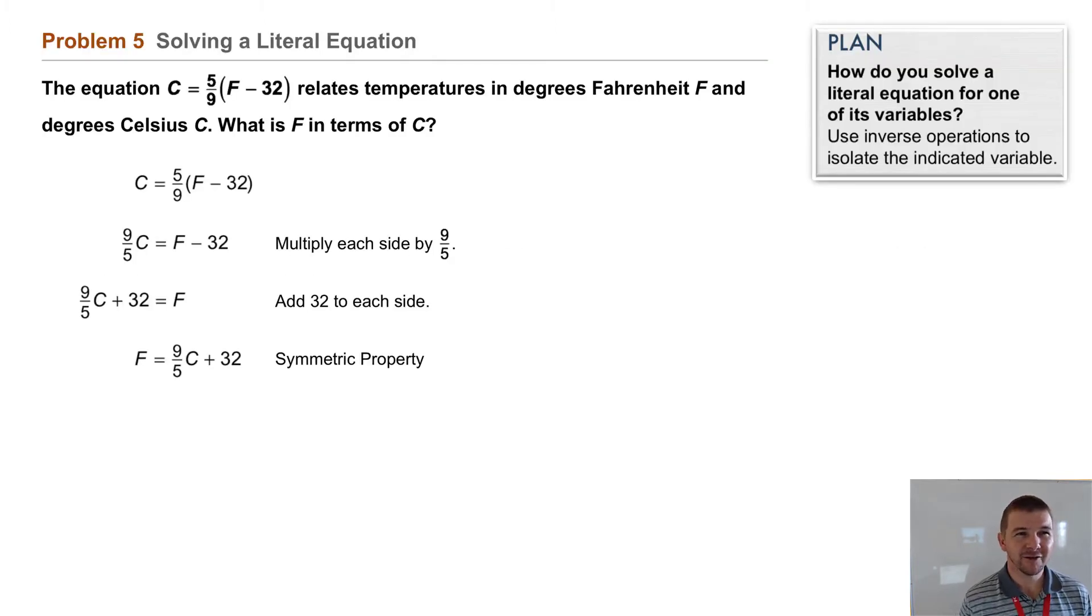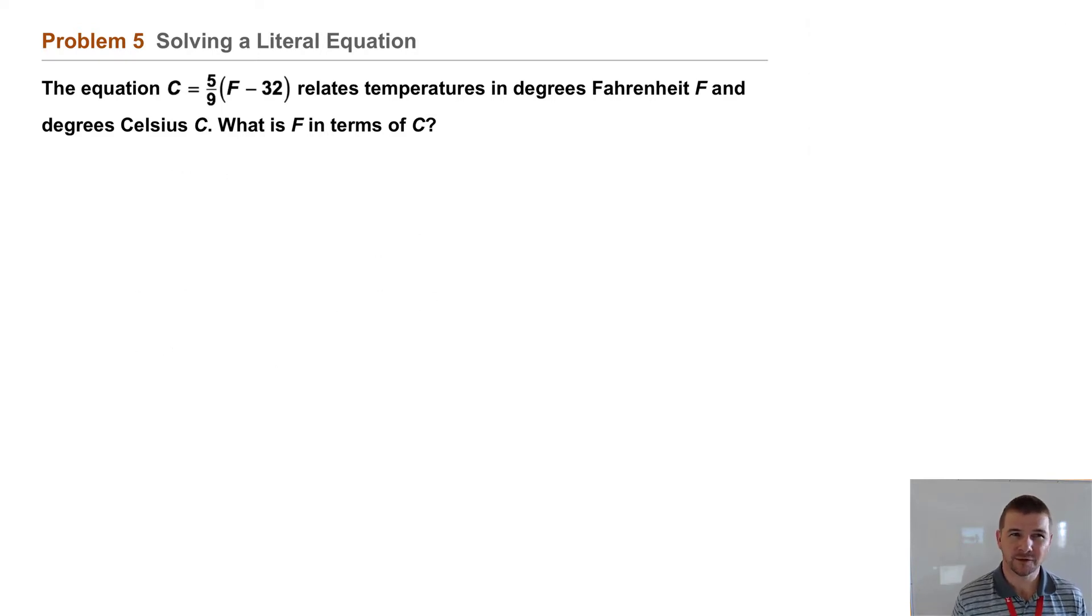Problem 5: Solving a literal equation. The equation C = 5/9(F - 32) relates temperatures in degrees Fahrenheit, capital F, and degrees Celsius, capital C. What is F in terms of C?